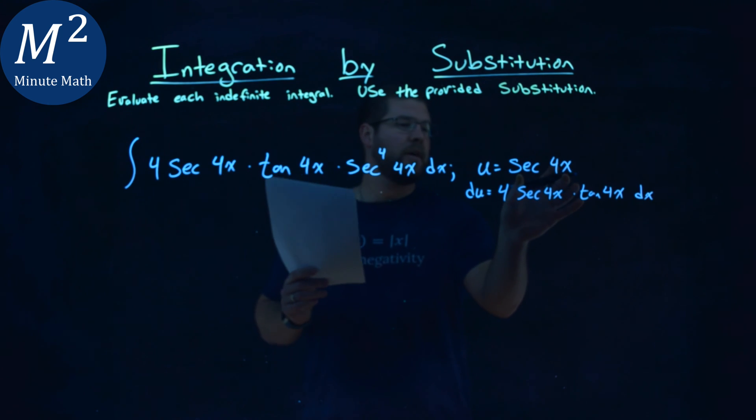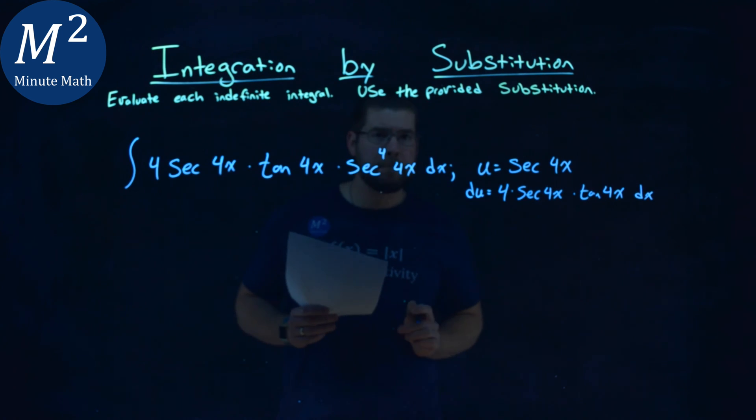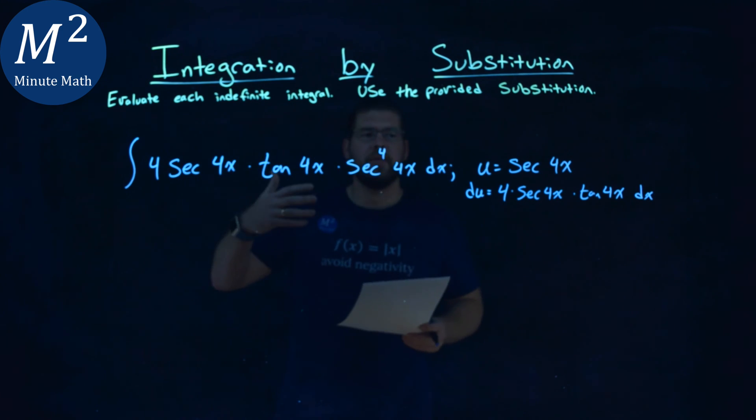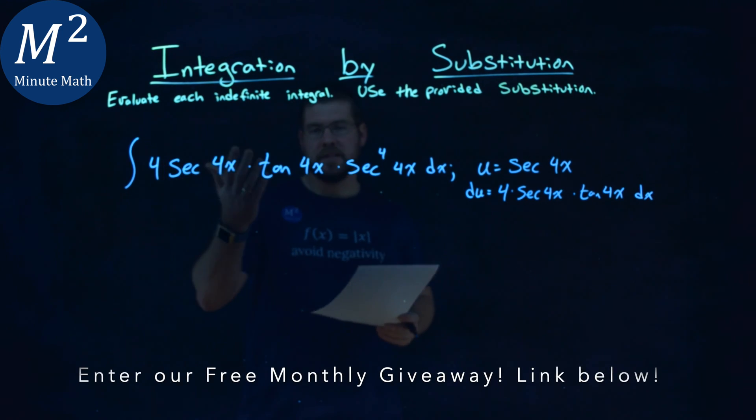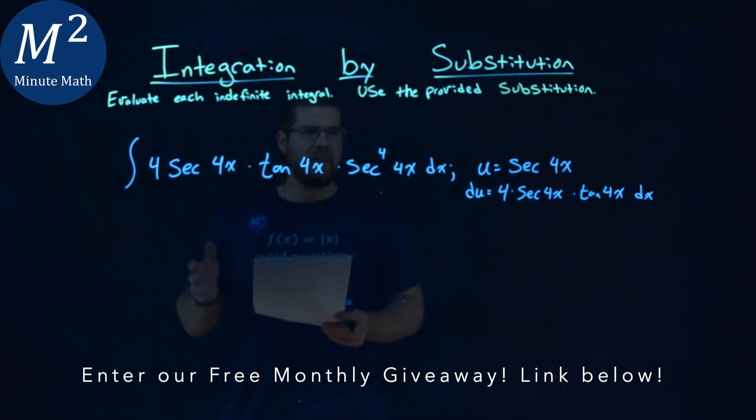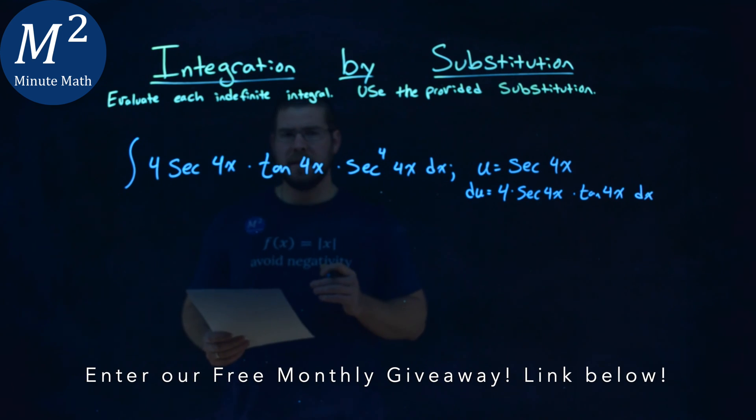Using our rules, secant of 4x has secant 4x times tangent 4x times the derivative inside, which is the 4, then dx. Now I want to rewrite this in terms of u and du. At first it looks complicated, but now that we found the derivative, it actually lines up pretty easily.